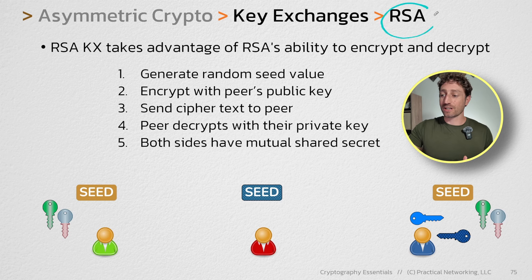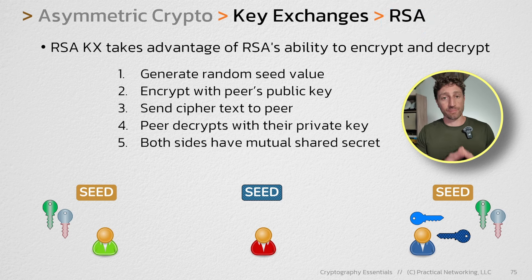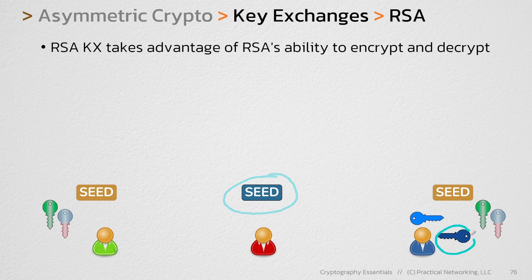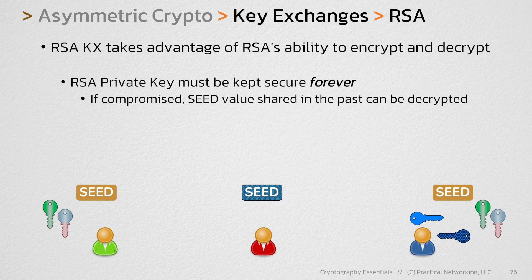So that is how you can use the RSA algorithm to facilitate a key exchange. But there's something important to mention. Remember that on the wire, the only value that was protecting the encrypted seed value was this private key. Therefore, this private key must be kept secure forever. Because even if that private key is compromised years in the future, we can use that private key to decrypt anything sent in the past.